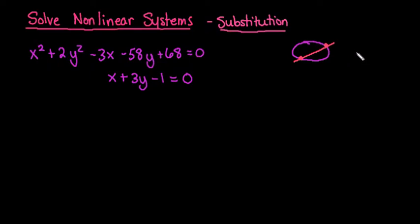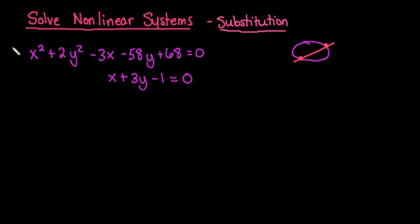We could have zero solutions where they don't intersect at all. We could also have a situation where there's only one solution if the line happens to be tangent to the ellipse. So when you are solving, you need to know at most how many solutions you could possibly have.